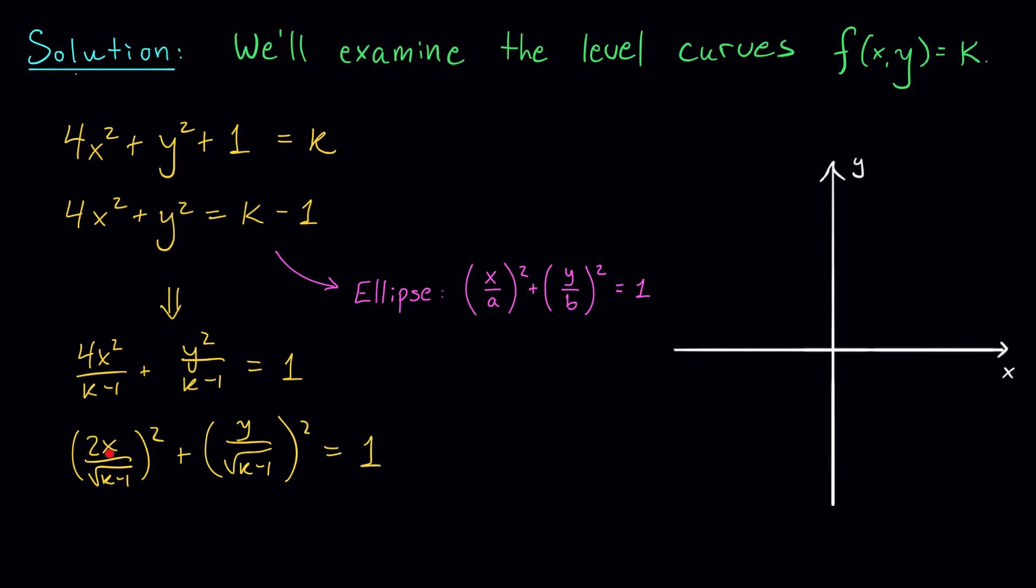Finally, I move that 2 to the bottom. I get (x/√((k-1)/2))² + (y/√(k-1))² = 1.